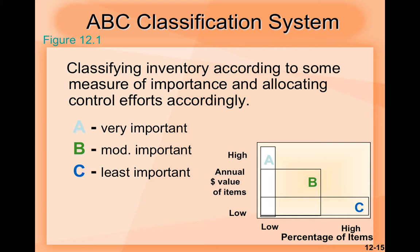Now we have the ABC classification system. The definition says: classifying inventory according to some measure of importance and allocating control efforts accordingly. The classifications are: A — very important; B — moderately important; and C — less important. There is a small graph in the corner showing A as high annual value of items in dollars, down to C as low annual value, while the percentage of items goes from low to high.